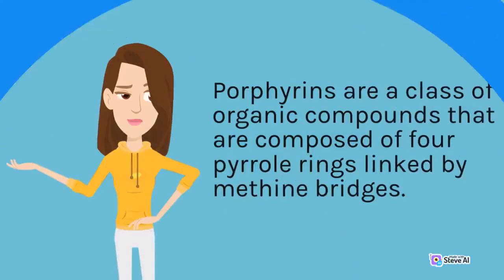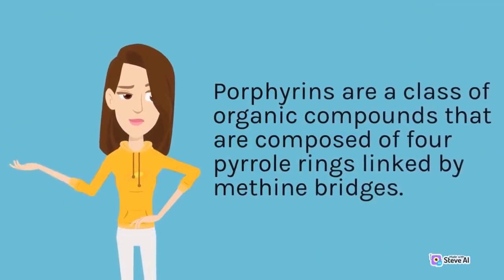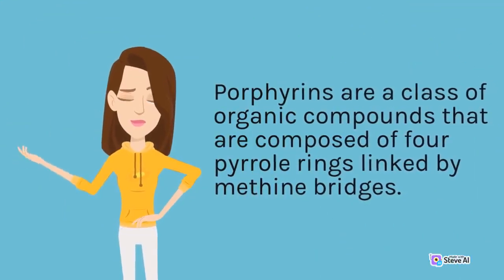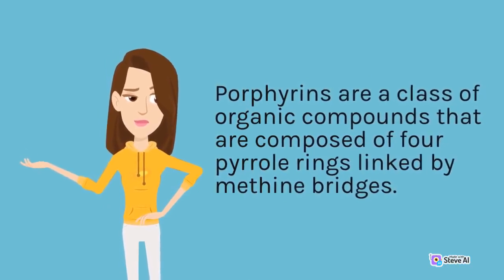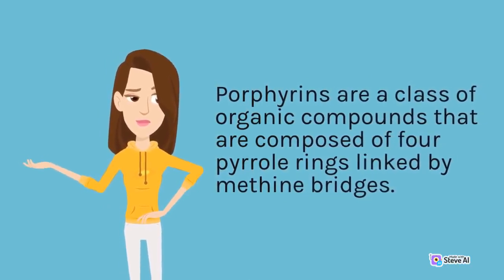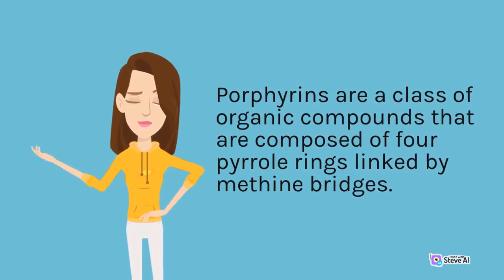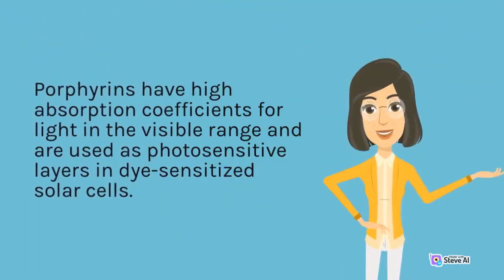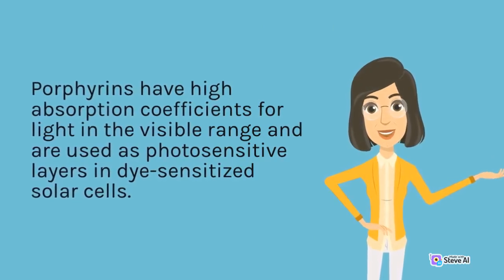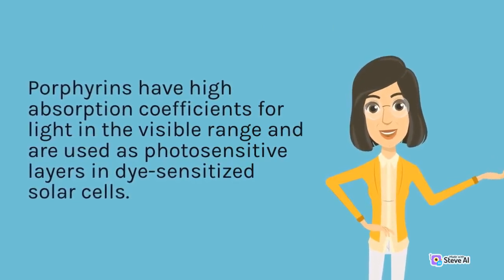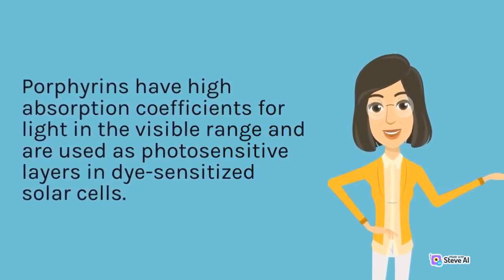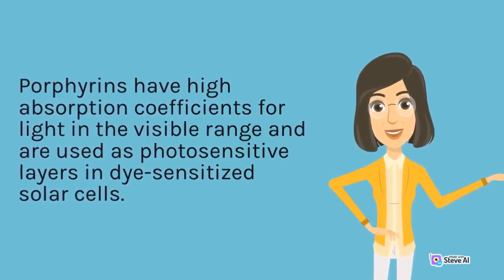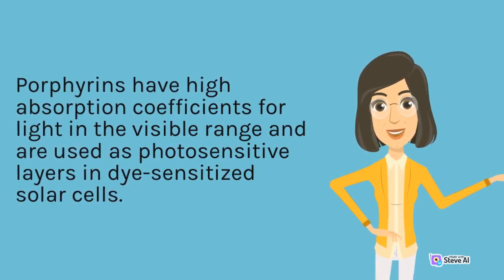Porphyrins are a class of organic compounds that are composed of four pyrrole rings linked by methane bridges. They have high absorption coefficients for light in the visible range and are used as photosensitive layers in dye-sensitized solar cells.